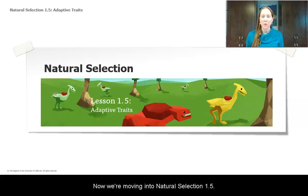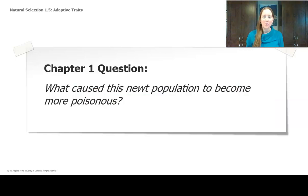Now we're moving into natural selection 1.5 where we're going to look at adaptive traits. You've learned a little bit more about how populations can change over time, so we're going to go back to our focus species of this unit and talk about what caused the new population to become more poisonous.